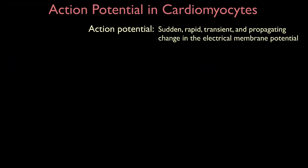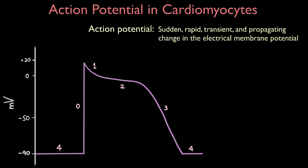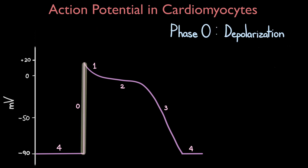An action potential is a sudden, rapid, transient, and propagating change in the electrical membrane potential. The ventricular cardiomyocyte action potential waveform can be divided into five main phases, numbered from zero to four. Let's start with phase zero of the cycle.